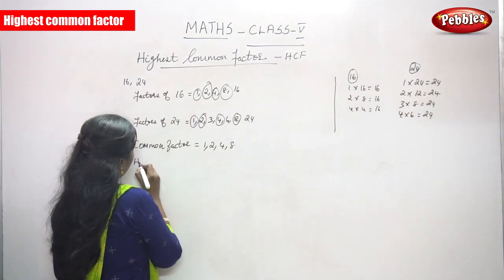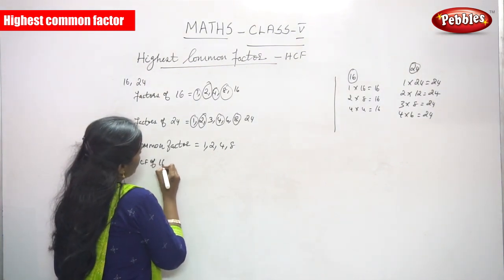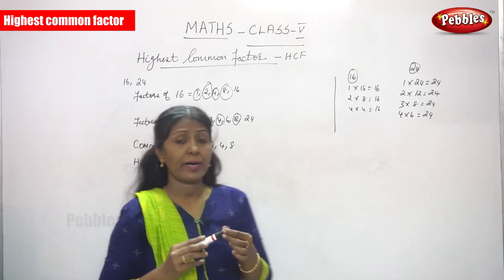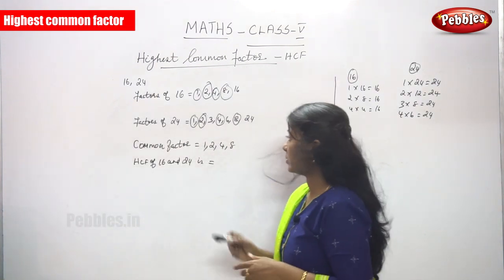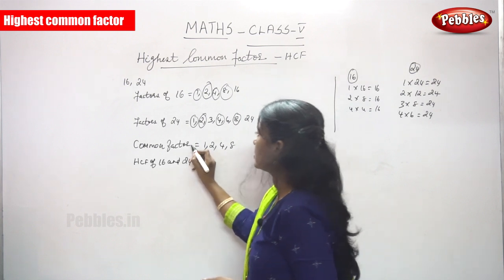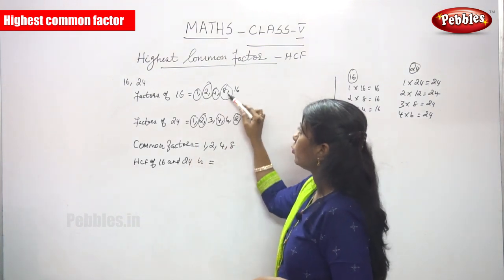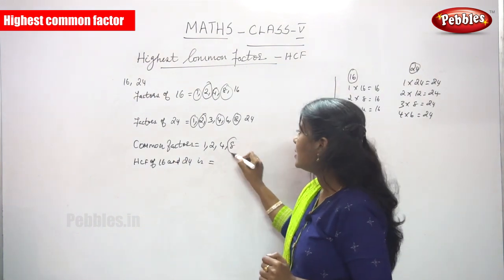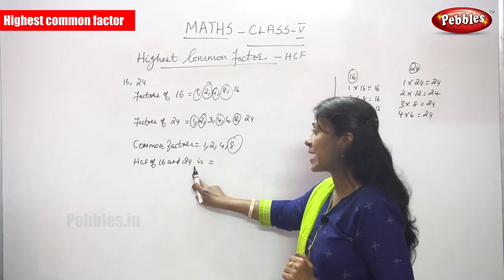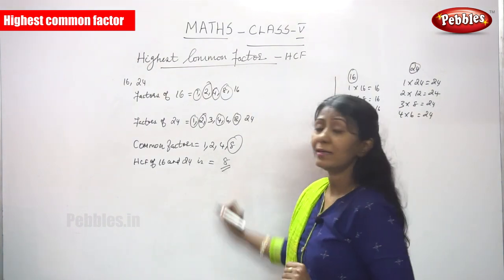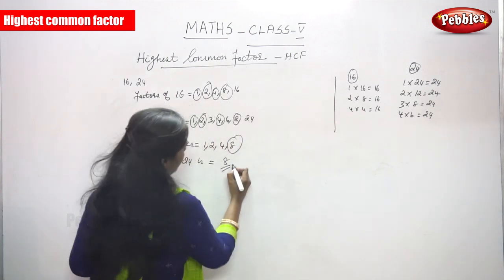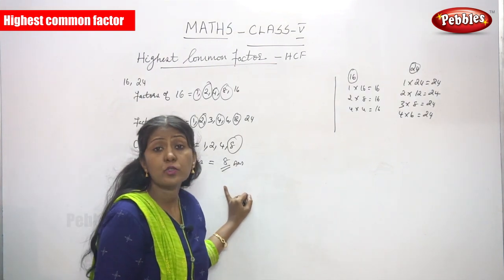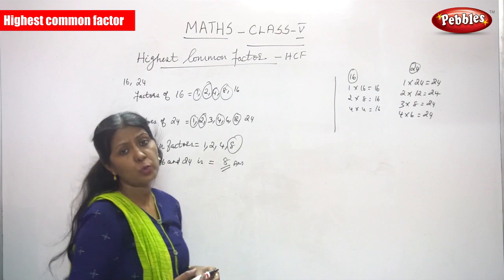Now write: HCF of 16 and 24. From the common factors — 1, 2, 4, and 8 — which is the highest number? That is 8. So circle the 8. Therefore, HCF of 16 and 24 is 8. That is the highest common factor of these two numbers, 16 and 24.